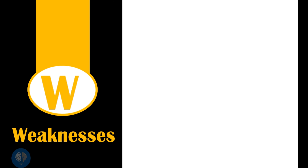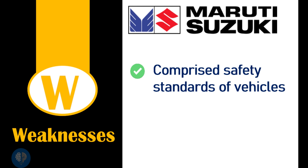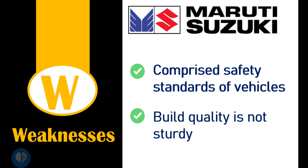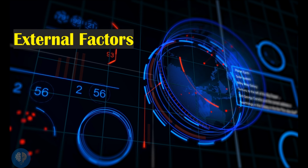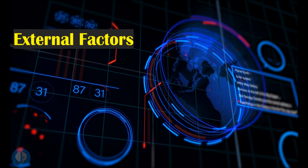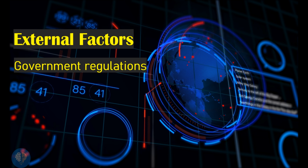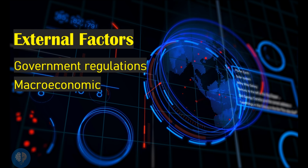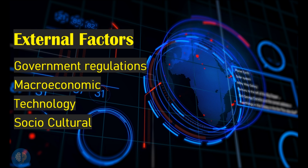Similarly, in the case of Maruti Suzuki, weaknesses can include compromised safety standards of vehicles due to the focus on affordable prices, and build quality not being sturdy. Now we will come to the external factors, which are factors beyond the control of the organization. These can include government regulations, macroeconomic factors, technological changes, and social or cultural changes.